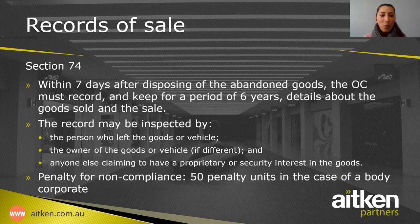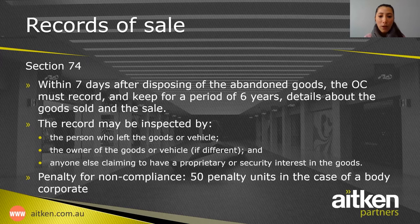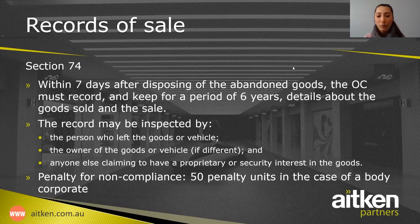Once the goods have been sold, within seven days the OC must record and keep for a period of six years details about the goods sold and details of the sale. Those records may be inspected by the person who left the goods or vehicle, the owner of the goods or vehicle if different, and anyone else claiming a proprietary or security interest in the goods. The penalty for non-compliance is 50 penalty units in the case of an owner's corporation.